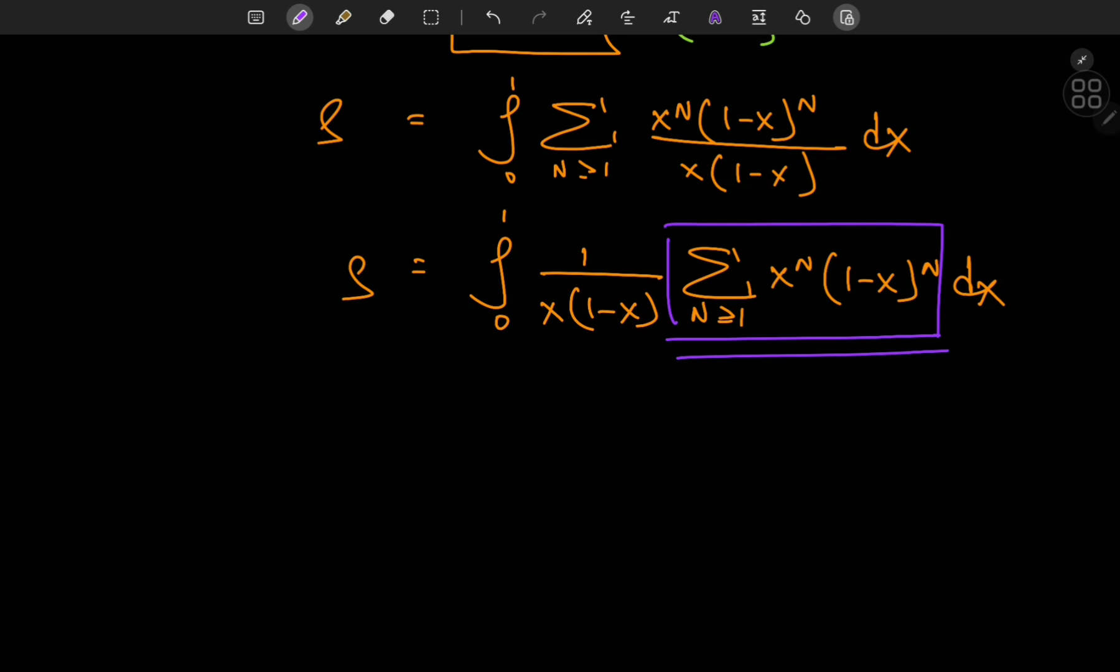The fact that I'm integrating from 0 to 1 is pretty useful over here because we know that if we sum over the non-negative integers k, x to the k, provided that the absolute value of x is less than 1, we get a convergent geometric series that sums out to 1 by 1 minus x.